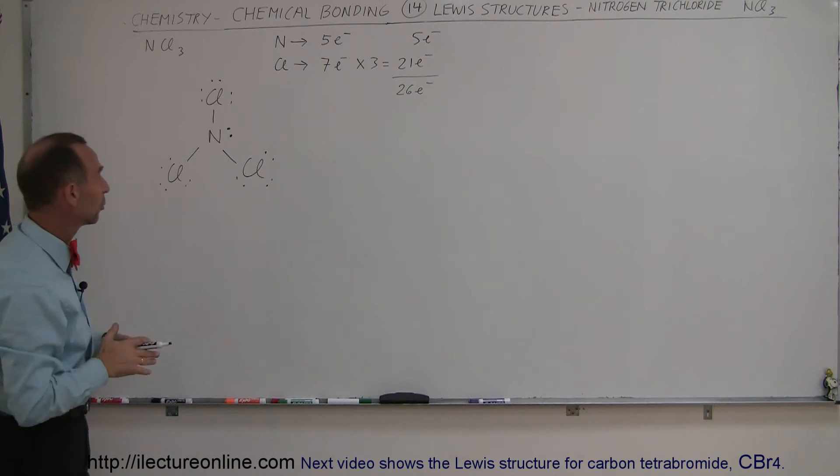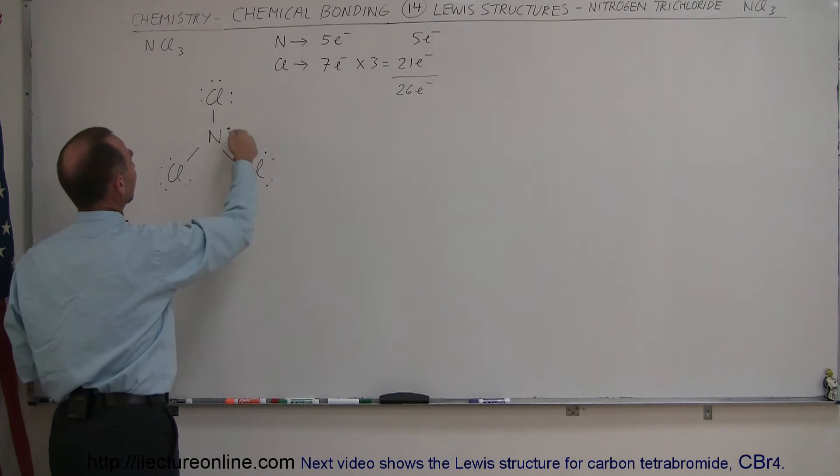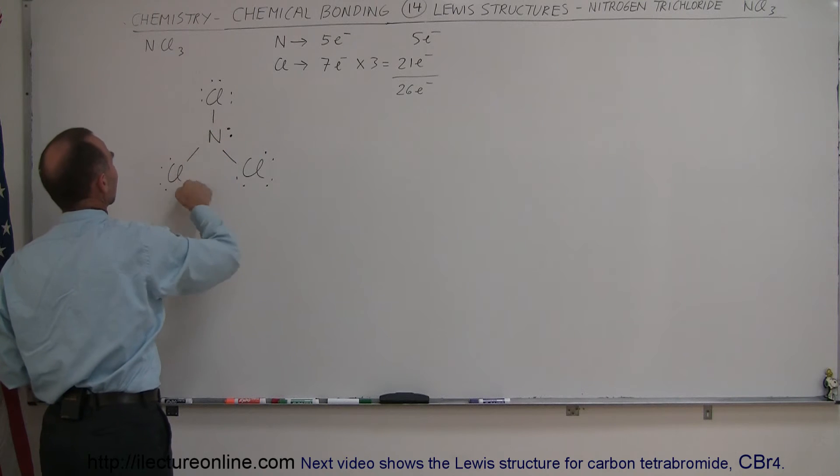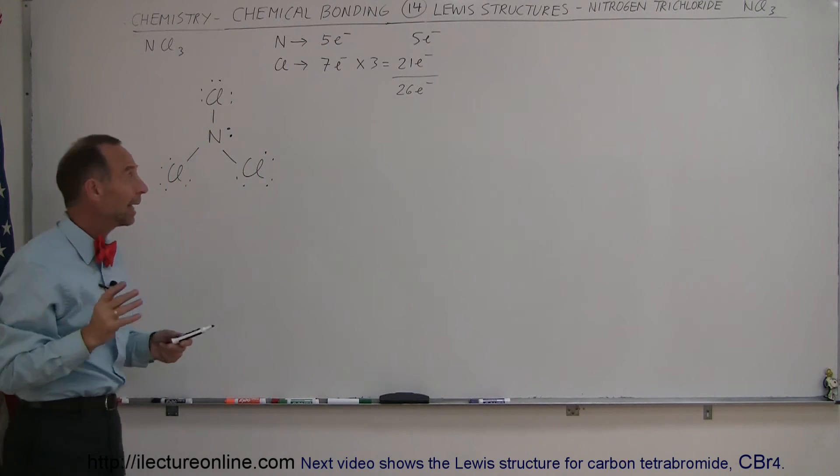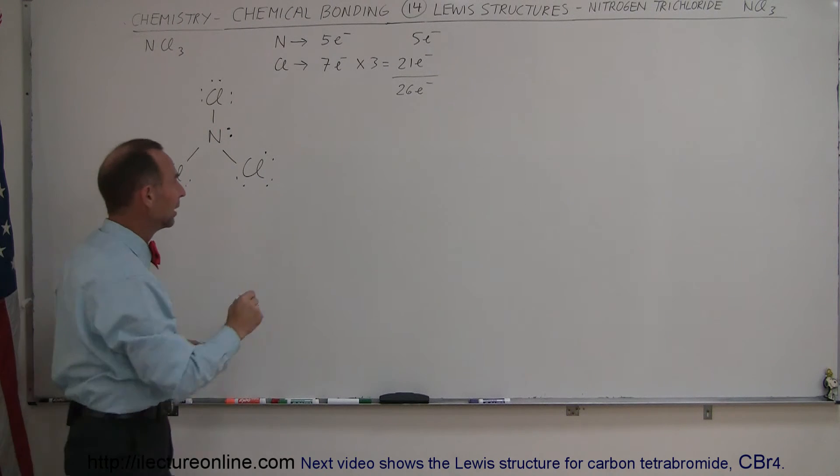Let's quickly check the octet rule. So notice for chlorine, every chlorine already has eight electrons part of time, so that's good. For nitrogen, two, four, six electrons total being shared with chlorine plus the two additional ones. So part of time, nitrogen will indeed have eight electrons. So the octet rule is satisfied.